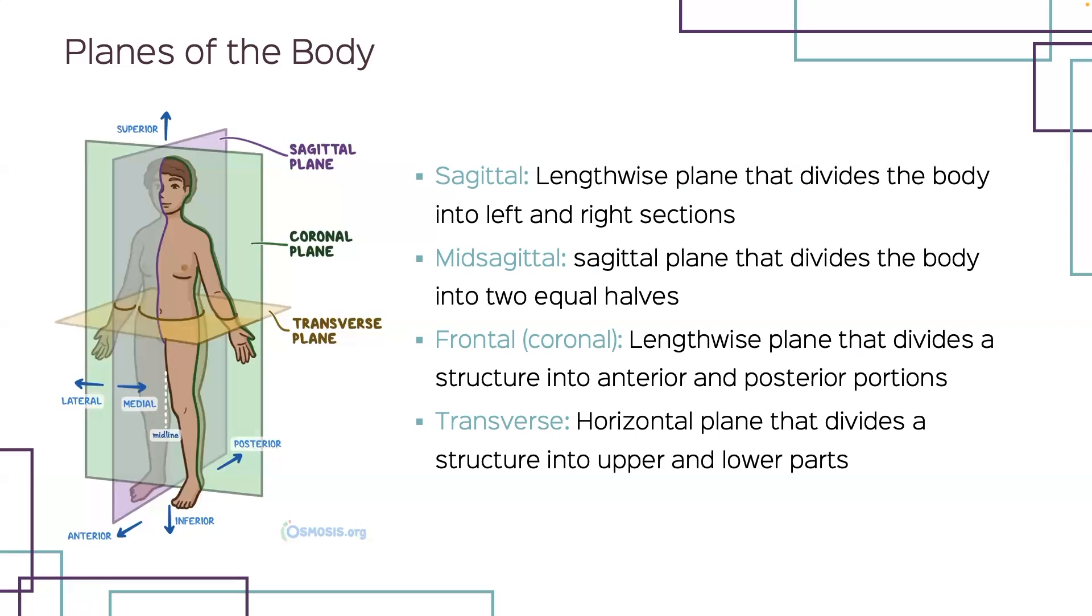Your frontal plane runs from side to side and gives you a front and a back portion. It's also known as the coronal plane. You see that it cuts the body into the front half and then the back half.